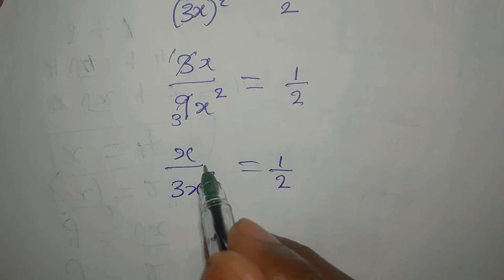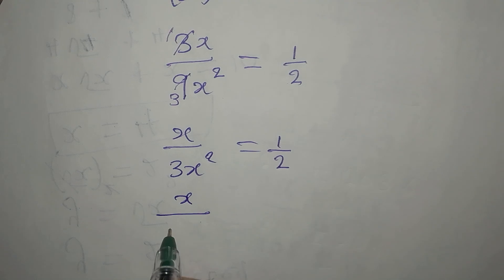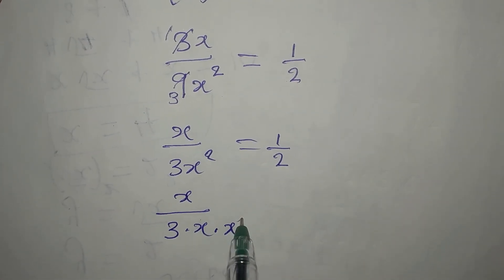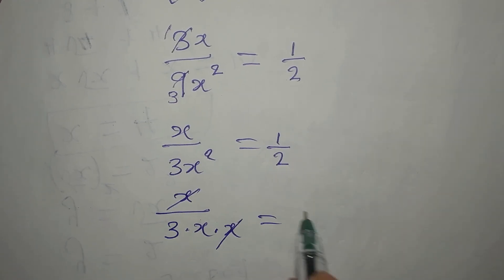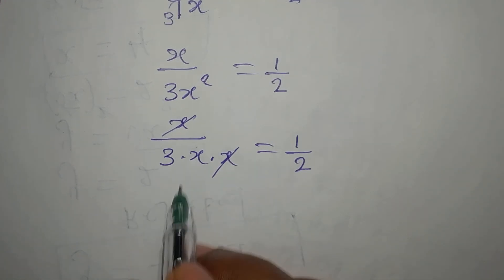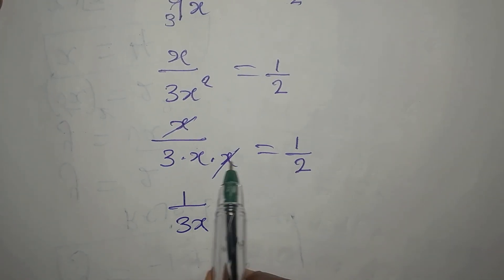I can equally simplify this further because this is the same thing as x over 3 times x times x. This can go there, and everything equals 1 over 2. Now this means I have 1 over 3x because x into x is 1. This equals 1 over 2.